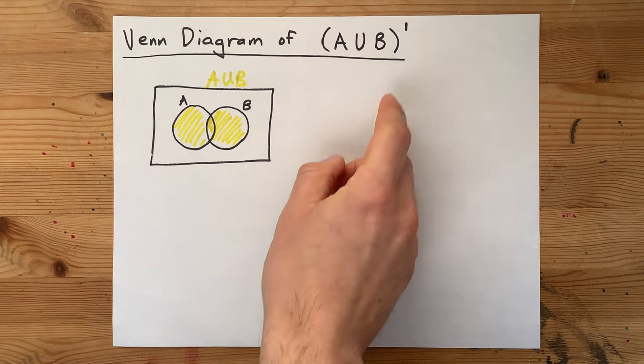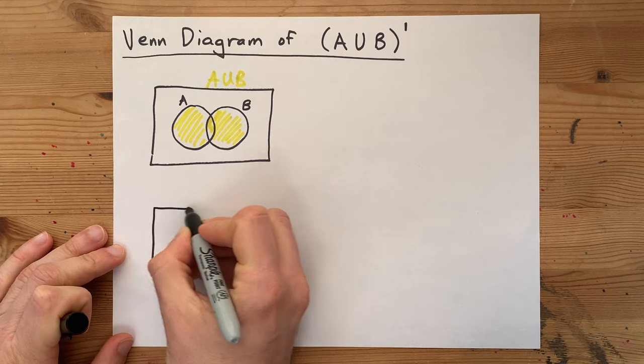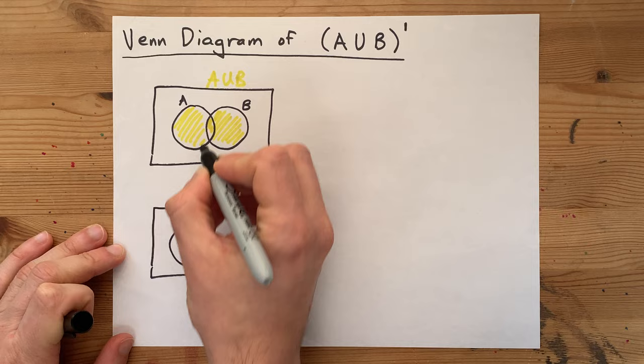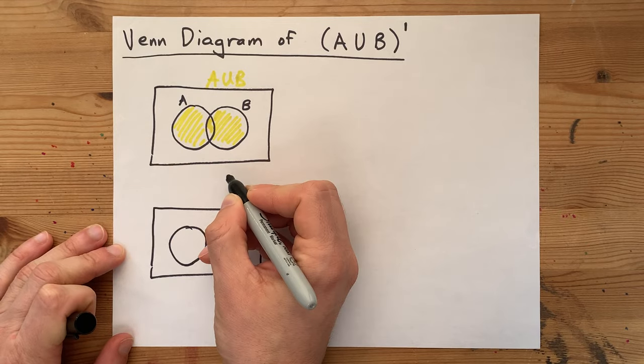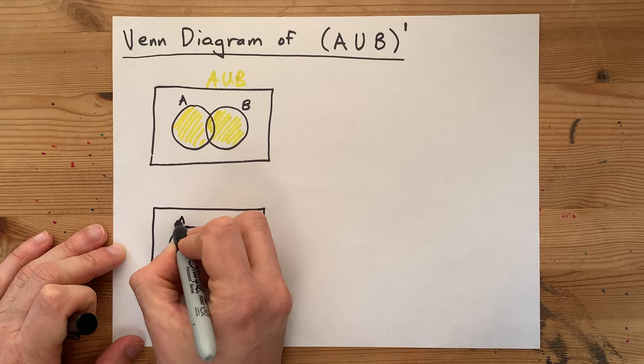But what we want to do is take the complement of that. The complement is the exact opposite. What that means is everything that was filled in or shaded here is not shaded in the one below, and vice versa.